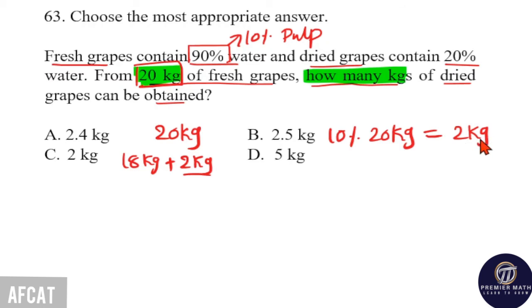So, from this 2 kg, we need to make dried grapes. But here, dried grapes contain 20% water. 20% water means remaining 80% is the pulp. But here, this 2 kg contains no water. But we need 20% water.